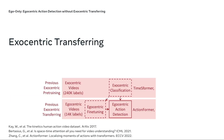Existing approaches rely on exocentric pre-training that classifies third-person videos with lots of labels. An example could be a TimeSformer pre-trained on Kinetics-400. Then, this pre-trained model is fine-tuned on egocentric videos with much fewer temporal segments of actions.